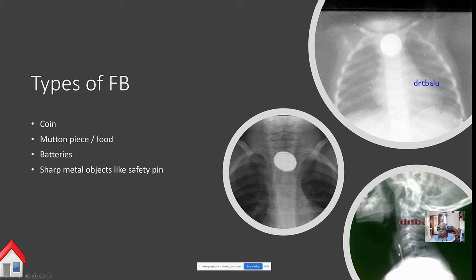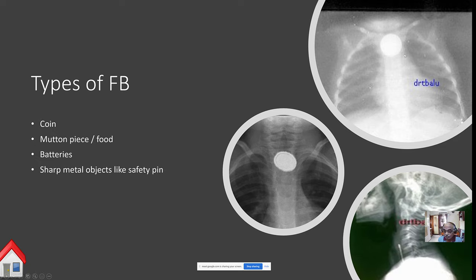In the lateral view, if you see the end-on view of the coin, the foreign body is at the level of the cricopharynx. If you see the face-on view in the lateral view, it shows the foreign body is in the glottis area. To repeat: the esophagus is slit horizontally, so the coin slides in with its longest dimension horizontal; in the larynx, the longest dimension is vertical. This button cell is a deadly foreign body — the acid from it diffuses out and causes ulcers in the esophageal mucosal lining.